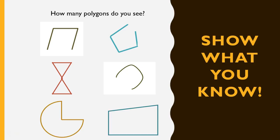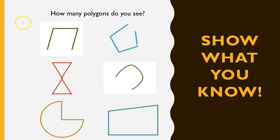I'm going to have you take a look at these shapes. How many polygons do you see here? Well, I know this one is open, so that is not a polygon because the ant could crawl out. This one is open as well — not a polygon. This one's open as well, not a polygon. I'm going to start crossing off the ones that I know are not right.